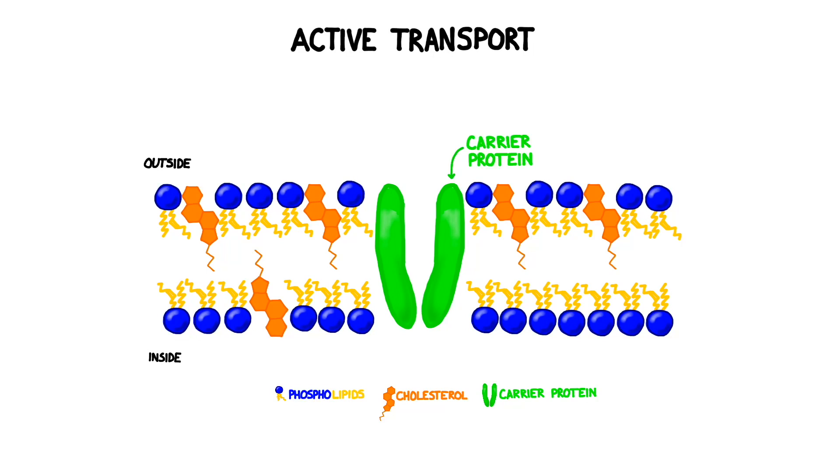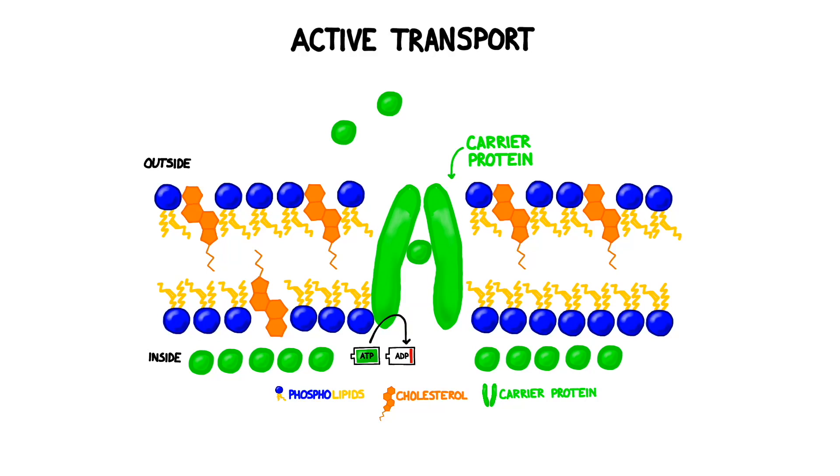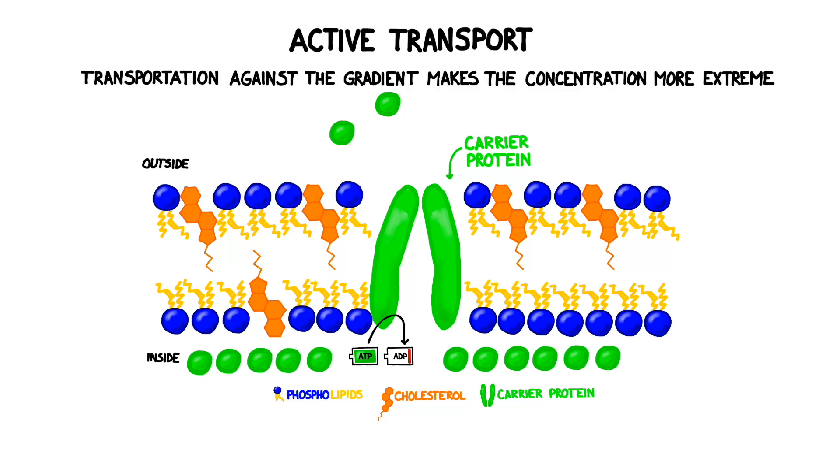Active transport often uses channel proteins, similar to those used in facilitated diffusion. These channel proteins charge a toll to admit a molecule. In return for a small amount of ATP, these carrier proteins allow certain molecules to pass through the cell membrane. These carrier proteins are especially useful because they can pump items against their concentration gradients. Passive transport can only allow particles to flow from high concentration to low concentration, but active transport can pump from low to high, thereby making the concentration more extreme, rather than only moving towards equilibrium.